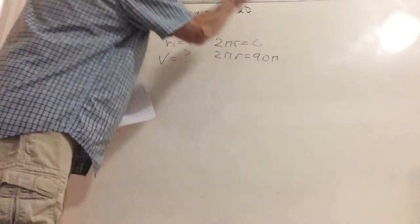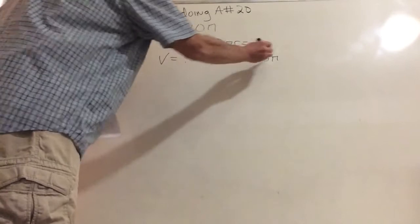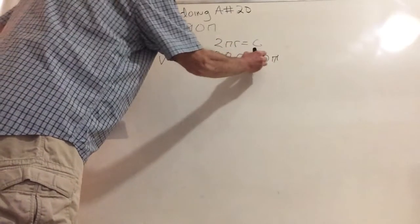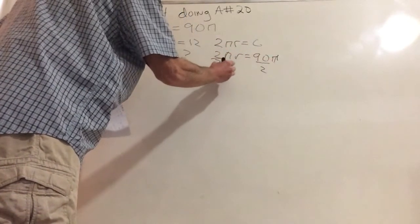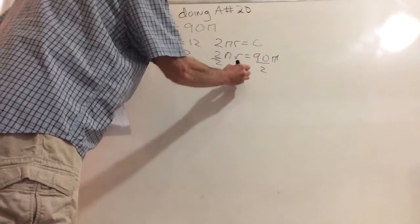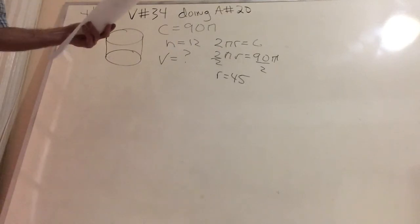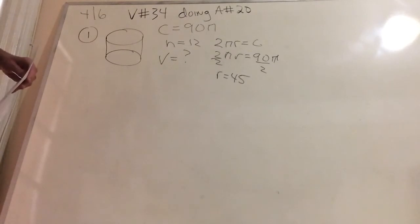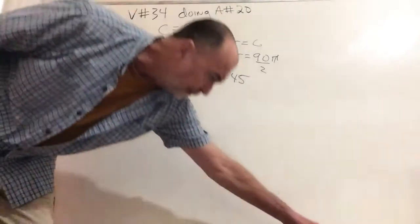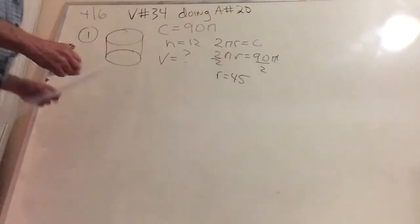Of course, without the π, we grab a calculator. Cancelling the π, dividing by 2, and r equals 45. A relatively big number, but I told you to use calculators anyway.